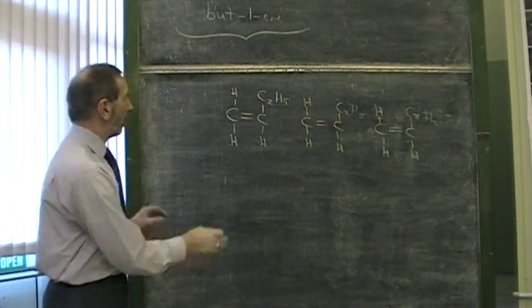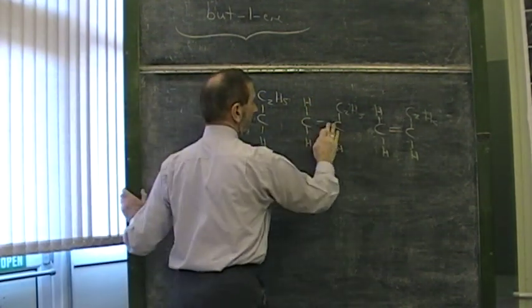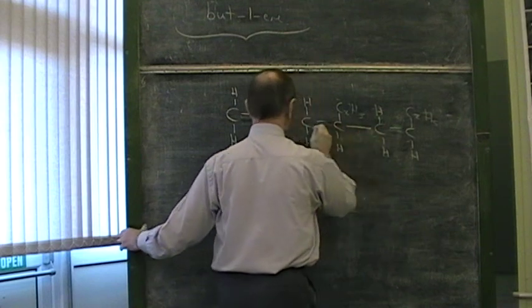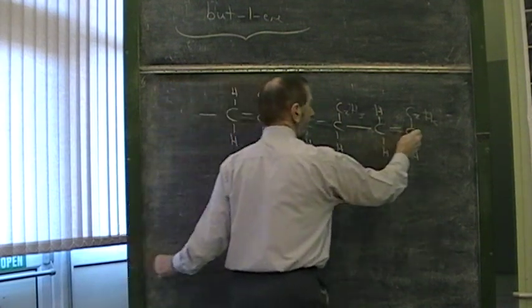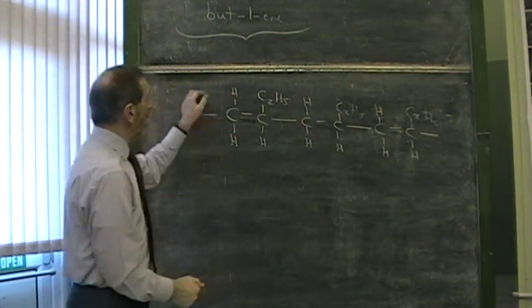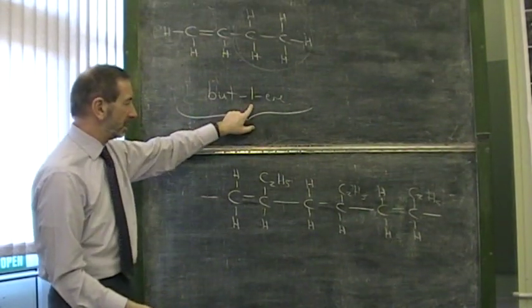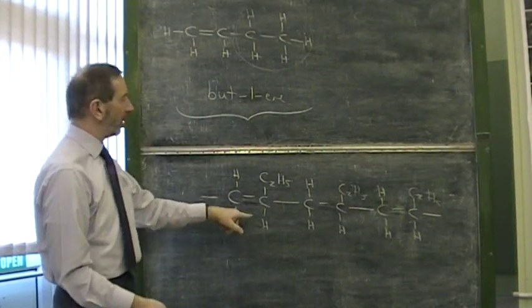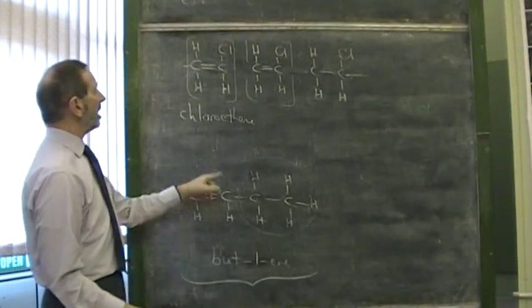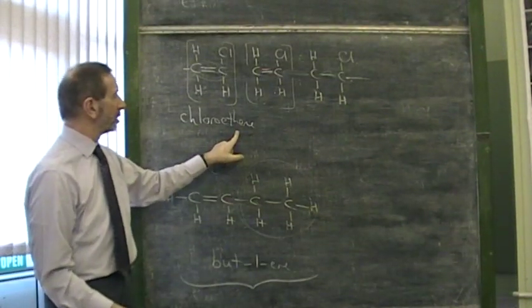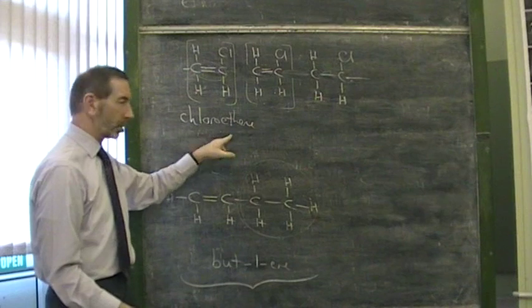But the secret is to draw them in this fashion. What happens? Well, all these double bonds break and they join together. What do we call this polymer? Well, because we started with but-1-ene, this would be called poly-but-1-ene. And here, this was chloroethene, so the polymer would be poly-chloroethene.